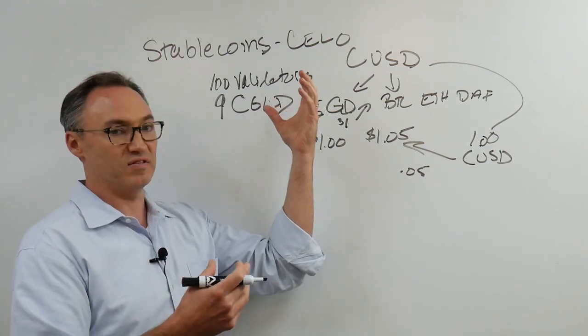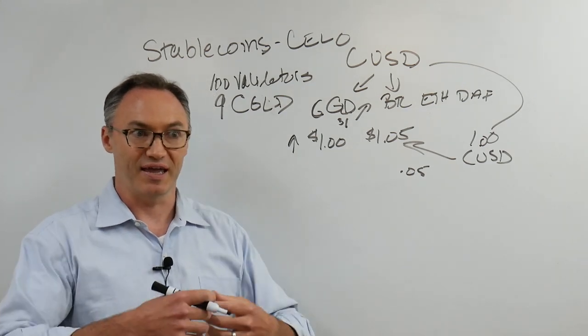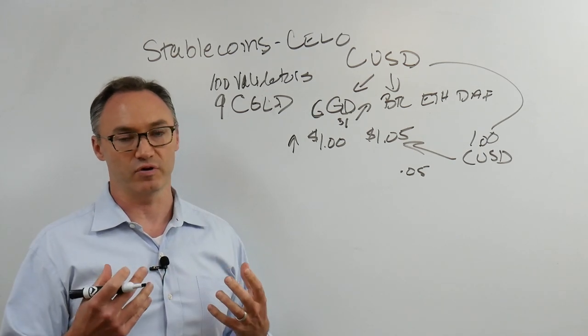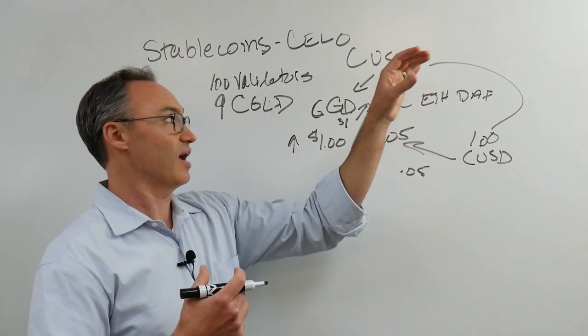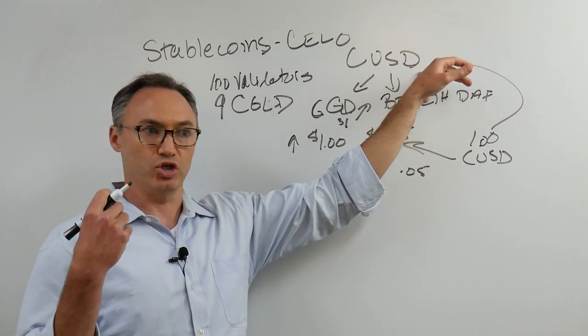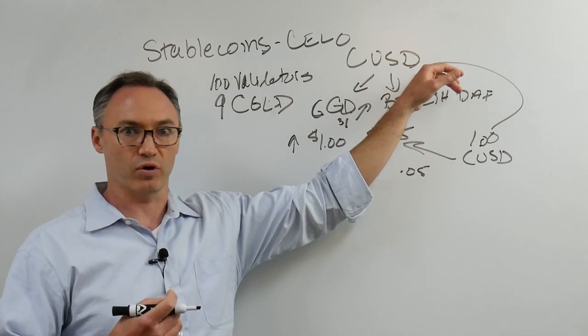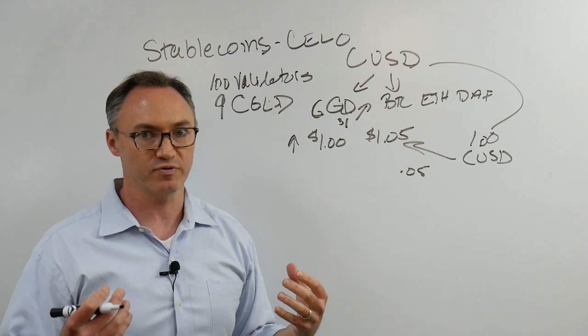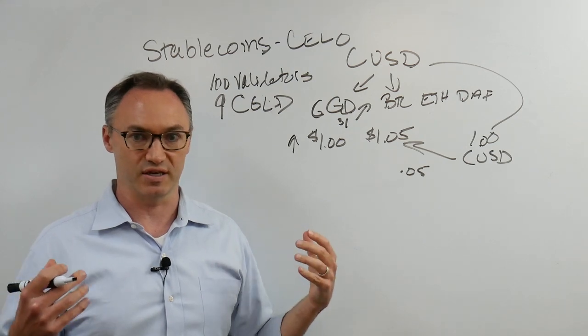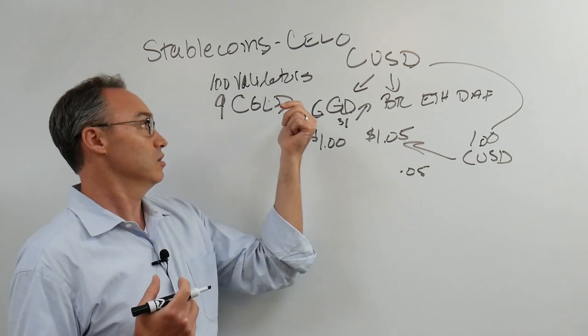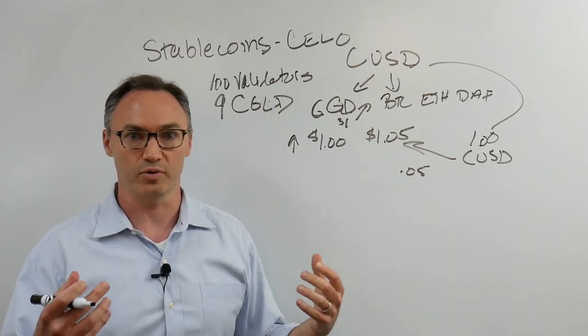The value here is built on the Cello organization getting developers to build applications that get users around the world to put this on their phone and use it. The value is only going to be there if there's demand, if people are actually using it. They had to create a stablecoin so users could transact and feel confident that the transactions they make are worth about a dollar. They've chosen a dollar because the U.S. dollar is the world reserve currency.